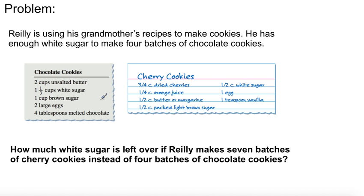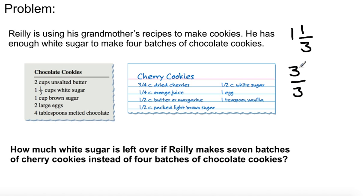Before we get to that, I want to explain one thing. What is a whole number? What makes up the 1 in 1 and 1 third? It varies from fraction to fraction. What makes up the 1 in this fraction? 3 over 3. And that only happens once in this case. So essentially, this mixed number is 3 over 3 plus 1 third put together. 3 over 3 is 1, and you know that because the fraction attached to that number is 1 third.